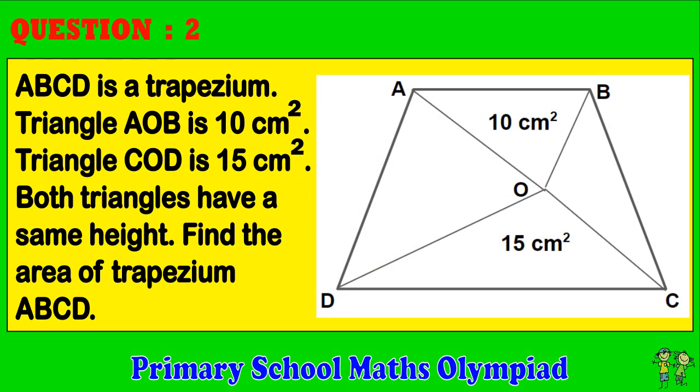Question 2: ABCD is a trapezium. Triangle AOB is 10 centimeters squared. Triangle COD is 15 centimeters squared. Both triangles have the same height. Find the area of trapezium ABCD.